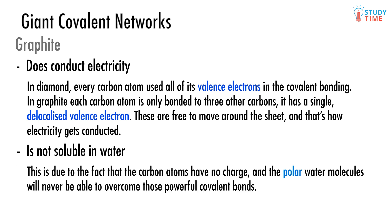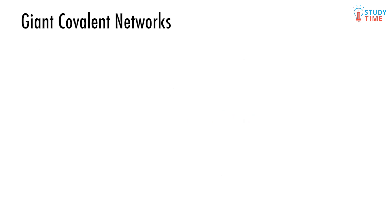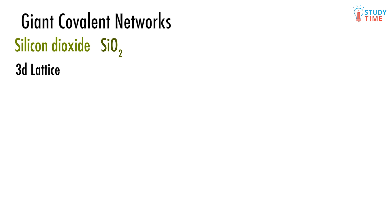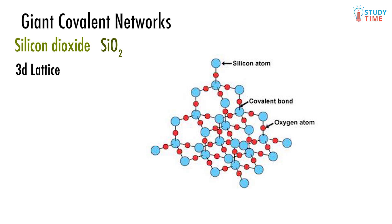Graphite is not soluble in water. This is due to the fact that the carbon atoms have no charge, and the polar water molecules will never be able to overcome those powerful covalent bonds. The final kind of giant covalent network you need to know for your chemistry exam is silicon dioxide, or SiO2. Silicon dioxide is arranged in a 3D lattice like diamond, and it shares all of diamond's properties — though it isn't quite as hard — for basically the same reasons.